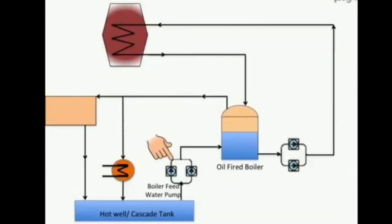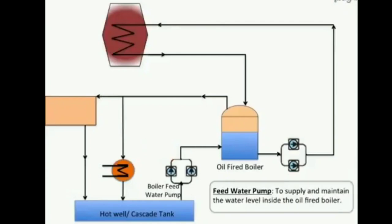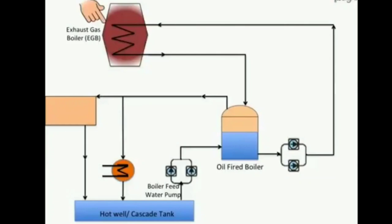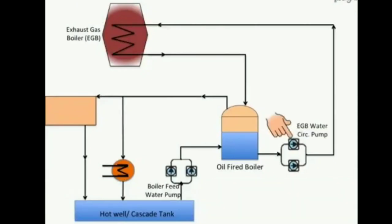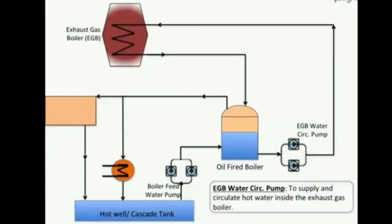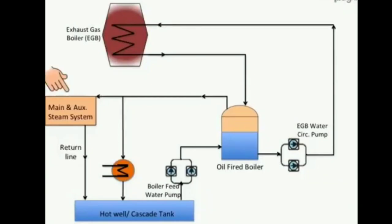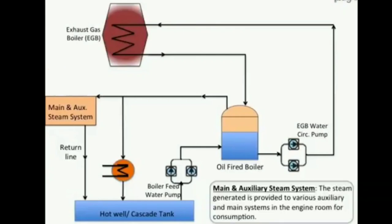A boiler water feed pump supplies and maintains the water level inside the oil-fired boiler. The exhaust gas boiler is an excess heat retrieving system which uses main engine exhaust to generate additional steam. The exhaust gas boiler water circulation pump supplies and circulates hot water inside the exhaust gas boiler, and the steam generated is provided to various systems in the engine room for consumption.